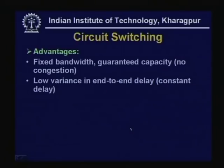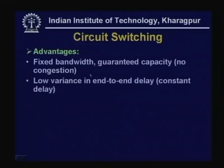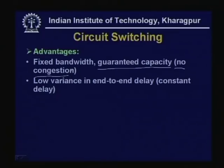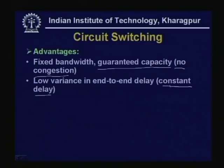Now let us look at the advantages of circuit switching. First, fixed bandwidth and guaranteed capacity: since there is an end-to-end dedicated link, the bandwidth is fixed and does not change. Both ends know the transfer rate after establishment and there is no possibility of congestion. Second, there is low variance in end-to-end delay — a constant delay essentially due to propagation time, with no other delay involved.